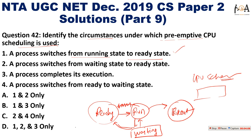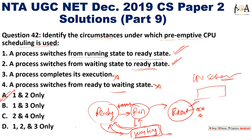A process switching from running to ready state needs preemptive CPU scheduling. A process switching from waiting to ready state also needs preemptive CPU scheduling. A process that has completed execution does not need preemptive scheduling. A process switching from ready to waiting also does not need preemptive scheduling. So only conditions 1 and 2 require preemption — Option A is correct.